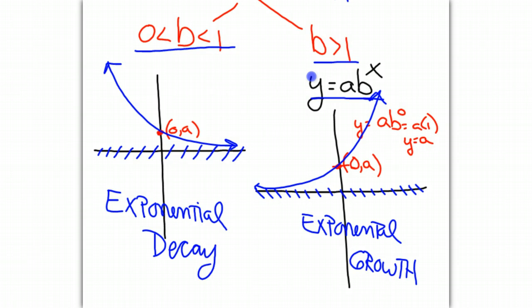Some similarities to the graphs: they both have asymptotes at the x-axis and both pass through the point (0,a). But growth is increasing as we move from left to right, and decay is decreasing as we move from left to right.